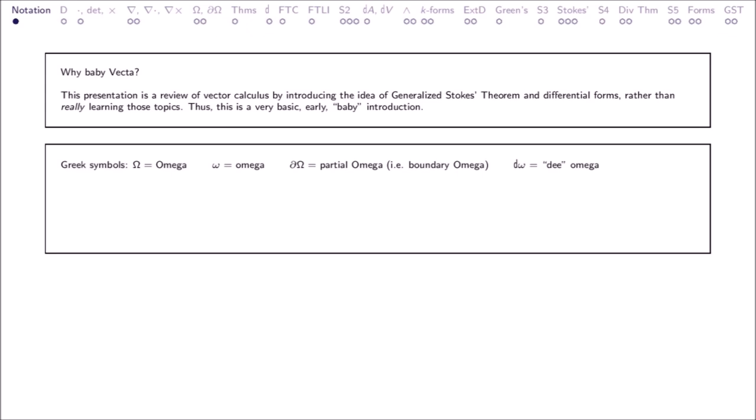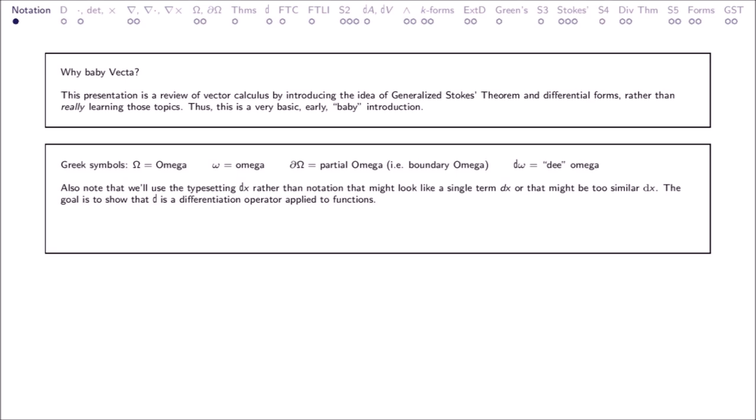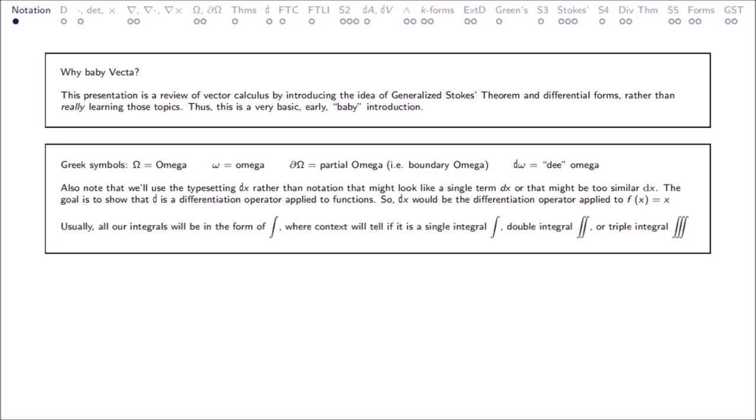We will use Greek symbols Omega, Boundary Omega, and D Omega. Also note that we'll use the typesetting dx rather than notation that might look like a single term or that might be too similar. The goal is to show that D is a differentiation operator applied to functions, so dx would be the differentiation operator applied to f of x equals x. Usually, all our integrals will be in the form of an integral where context will tell if it's a single, double, or triple integral.